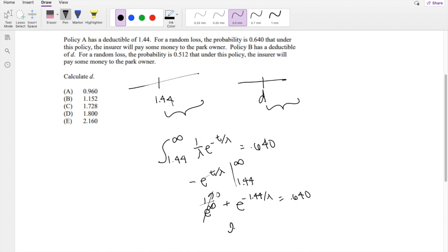I can take the natural log of both sides. Natural log, cancel this out. Natural log of 0.640. So this is equal to negative 1.44 divided by lambda.